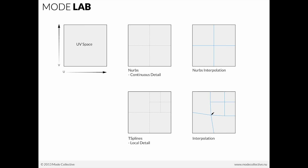So when we look at the differences between NURBS and T-Splines, you can see we have this UV space, but in NURBS we have continuous detail, right? The interpolation in the NURBS will be throughout. Now, with T-Splines, the local detail allows for the interpolation to be local to the actual T-junctions or T-points.